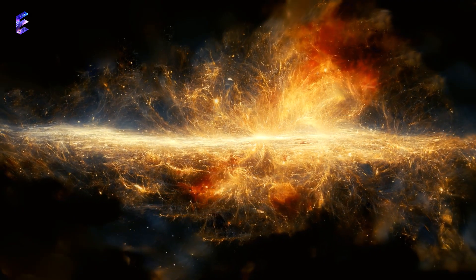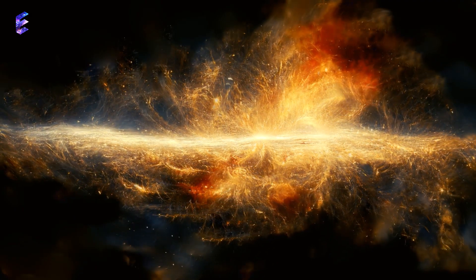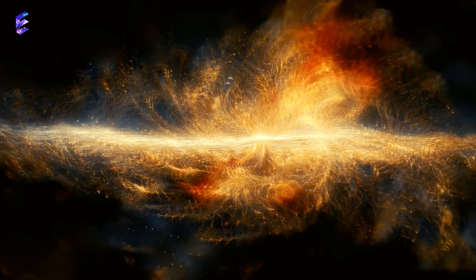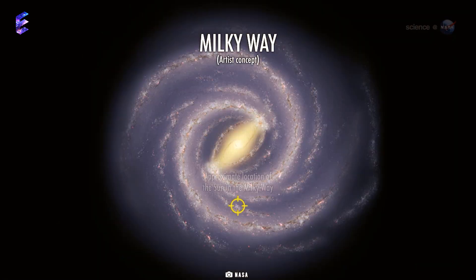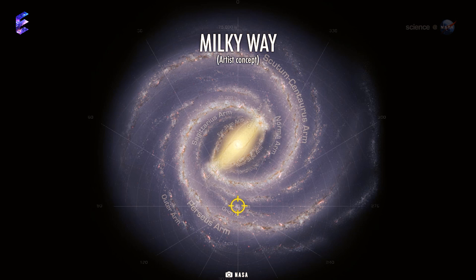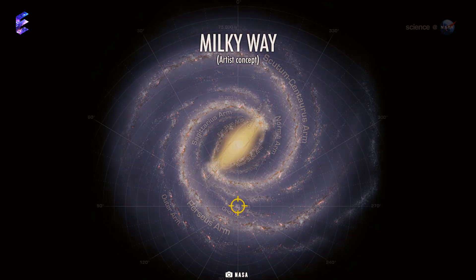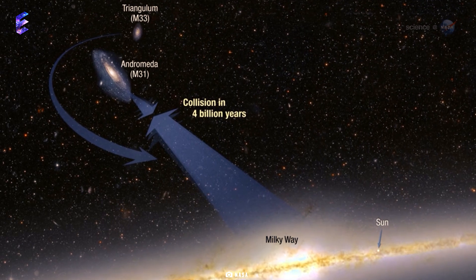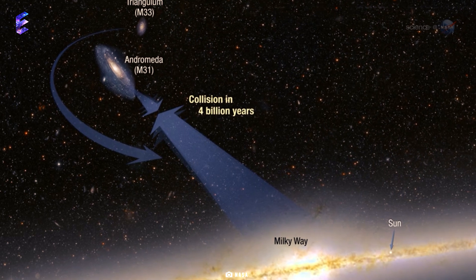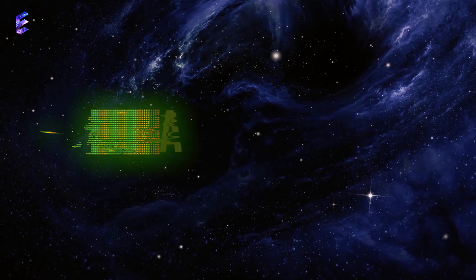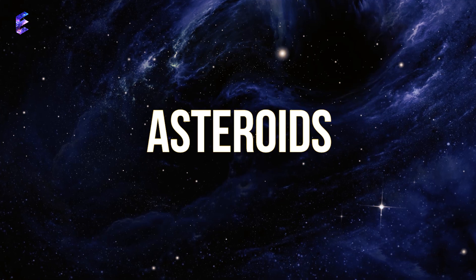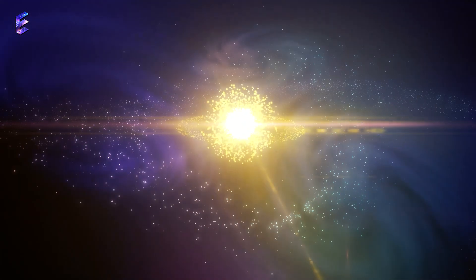This barred spiral galaxy is approximately 2.5 million light years from Earth. If scientific predictions are to be believed, the Milky Way and Andromeda galaxies are expected to collide in around 4 to 5 billion years.